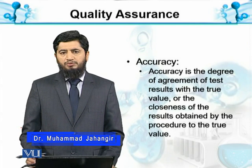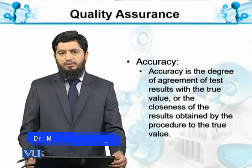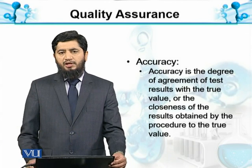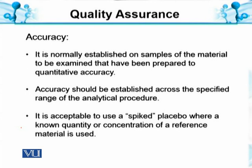The true value refers to the compound or component we have prepared — our standards — and we can verify that our analytical results vary. Accuracy is normally established on samples of material to be examined that have been prepared to quantitative accuracy. We can make accurate samples in the laboratory and then perform the analysis as a test method. Accuracy should be established across the specified range of analytical procedures.